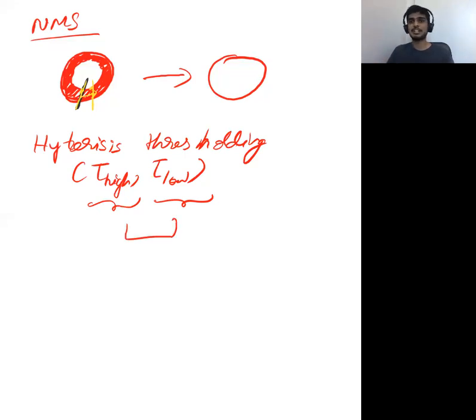Those intermediate pixels, some of them can be strong, some of them can be weak. We consider those intermediate pixels as strong if they are very close to the strong pixels. That's how Hysteresis Thresholding helps and it gives you a good balance between not over-thresholding and under-thresholding.